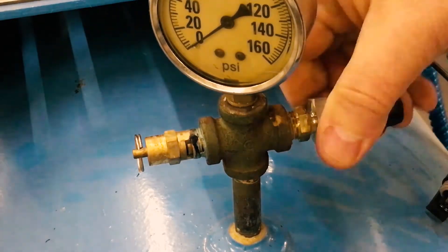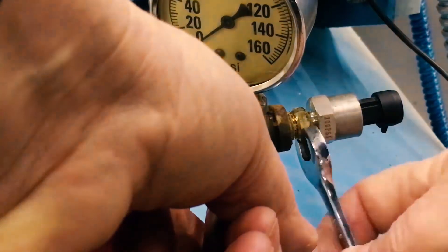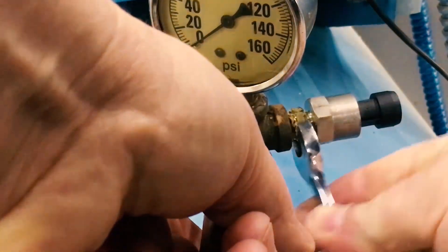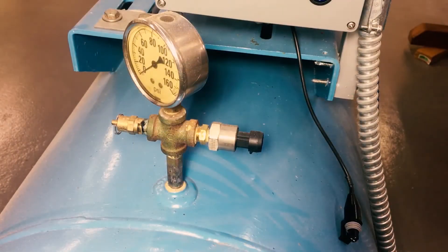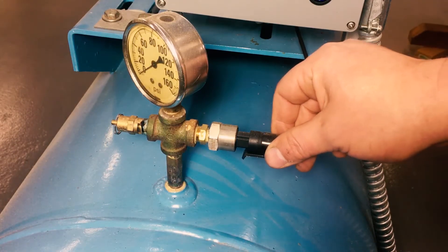After the wiring is completed, the pressure sensor can be installed on the compressor. On this compressor, we're adding it to the side of the T connector where the pressure gauge is located. Once the pressure sensor is installed, we can plug in the harness and connect it to the compressor controller's pressure sensor connection.